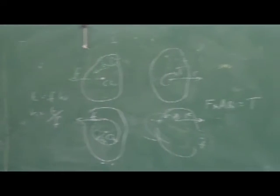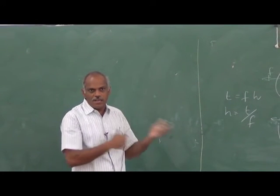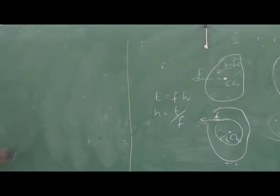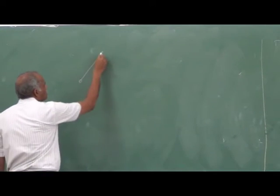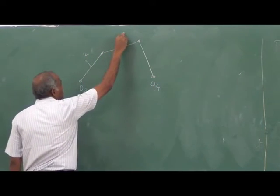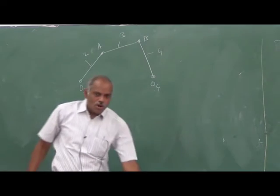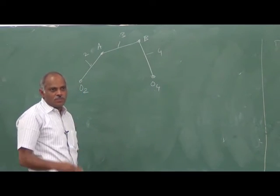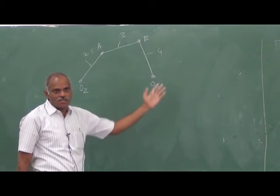We have discussed how to handle a rigid body undergoing linear acceleration alone, or one undergoing both linear and angular acceleration, and how to combine and introduce the inertial force. Now, coming to mechanisms — let us take a four-bar mechanism. We can label it: O2, O4, linkage 2, linkage 3, linkage 4, with points A and B.